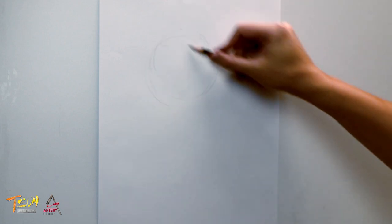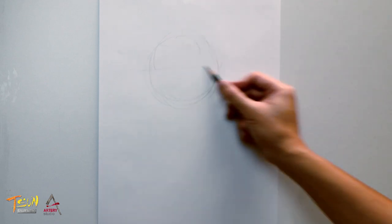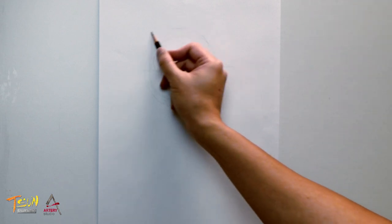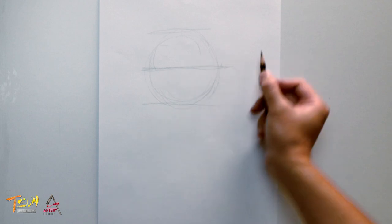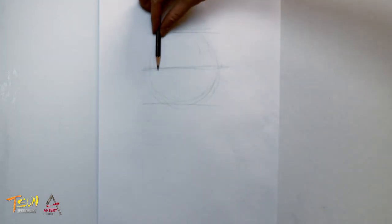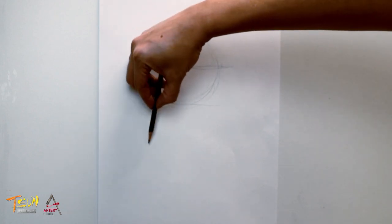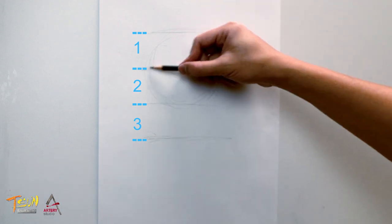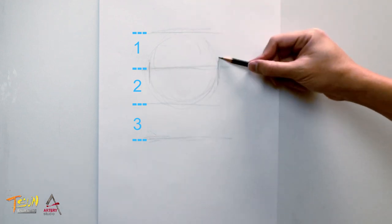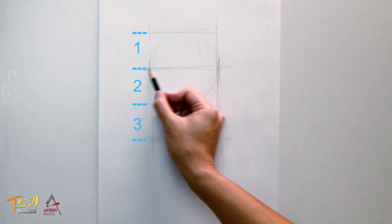First, draw a circle on paper. Put a line horizontally in the middle, then a line above and a line below the circle. Measure the distance between the lines and use this distance to draw another line below the circle. Now we create three equal spaces horizontally. Add two vertical lines on the side of the circle — this forms the width of the face.